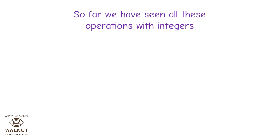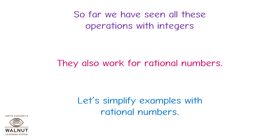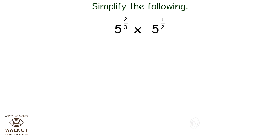So far we have seen all these operations with integers. They also work with rational numbers. Let's simplify examples with rational numbers. Simplify: 5 raised to 2 upon 3 multiplied by 5 raised to 1 upon 2 is equal to 5 raised to 2 upon 3 plus 1 upon 2.